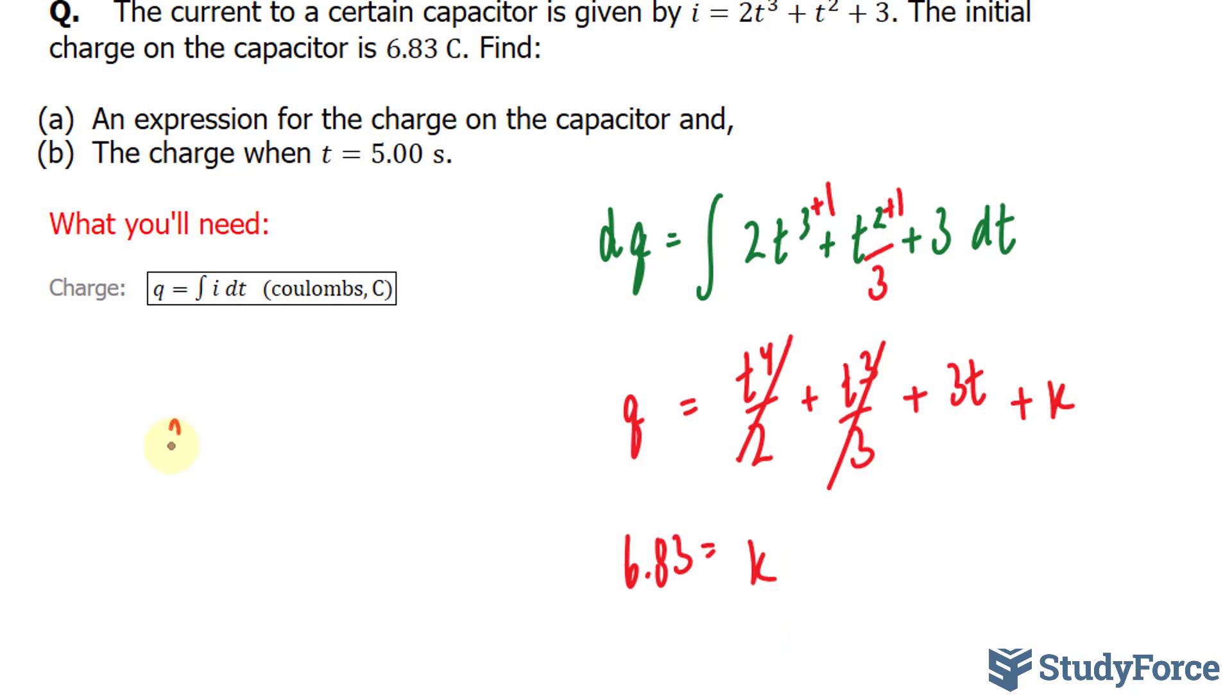This gives us a final equation of q = t⁴/2 + t³/3 + 3t + 6.83.